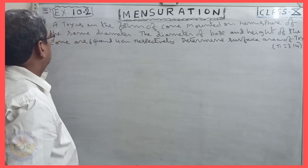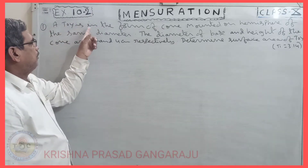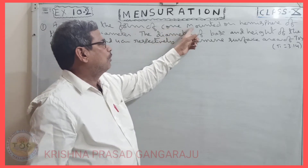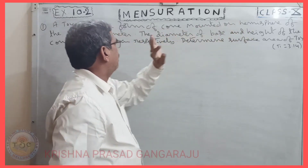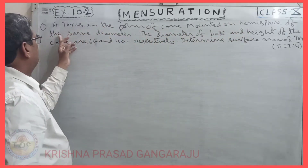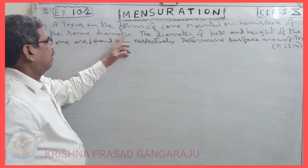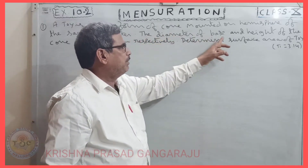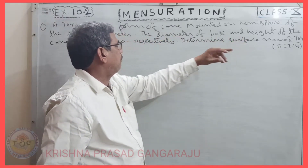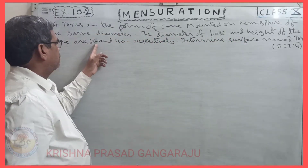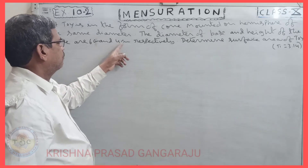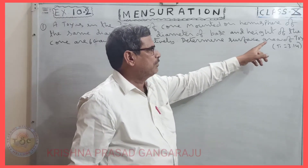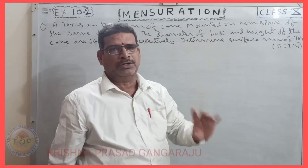Question No. 1. A tie is in the form of cone mounted on hemisphere of the same diameter. The diameter of the base and height of the cone are 6 cm and 4 cm respectively. Determine surface area of tie.